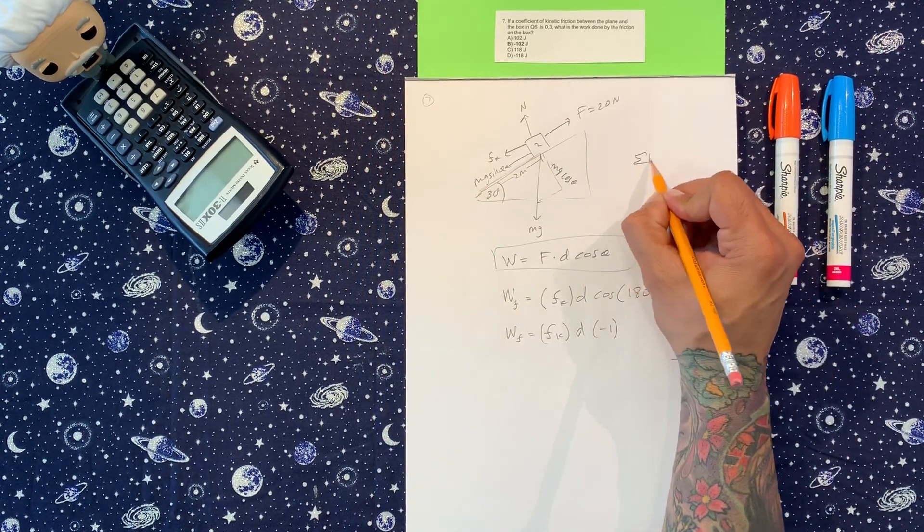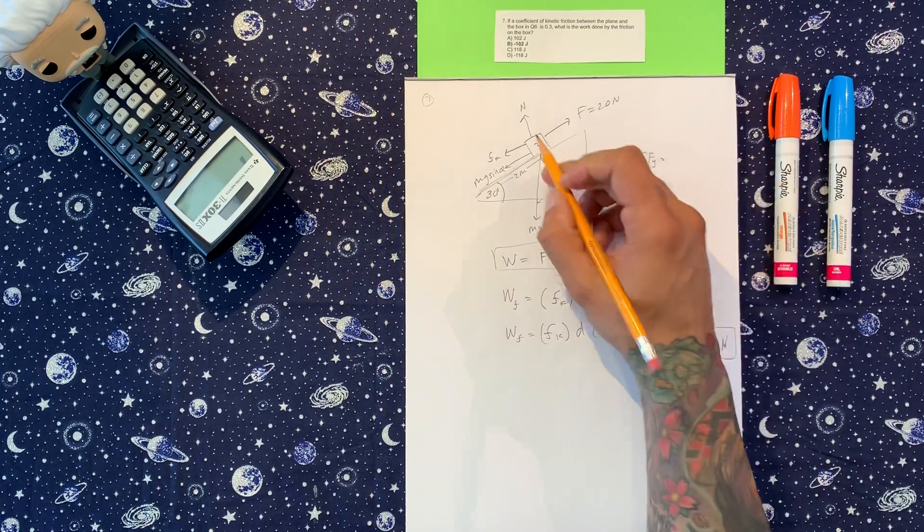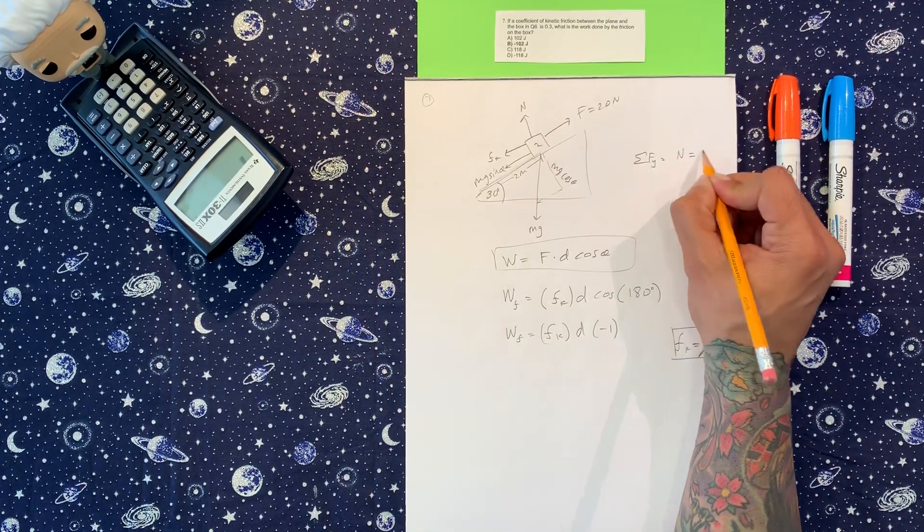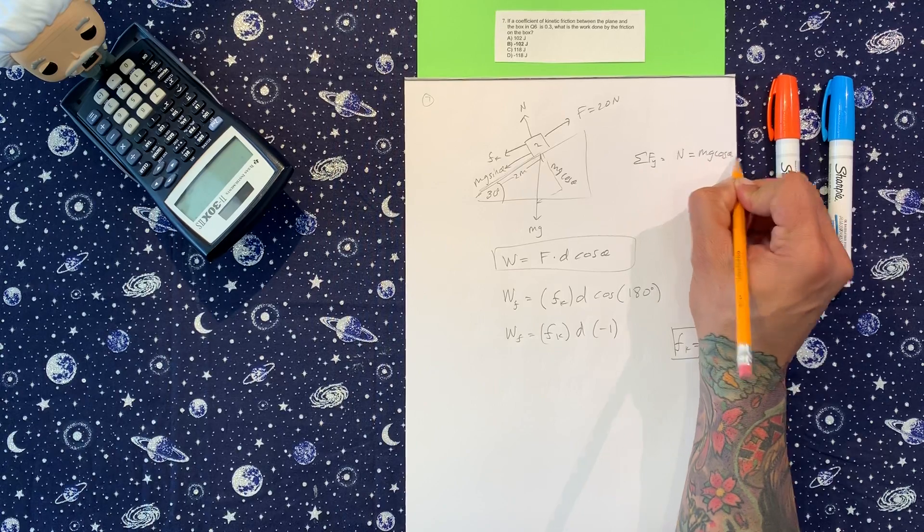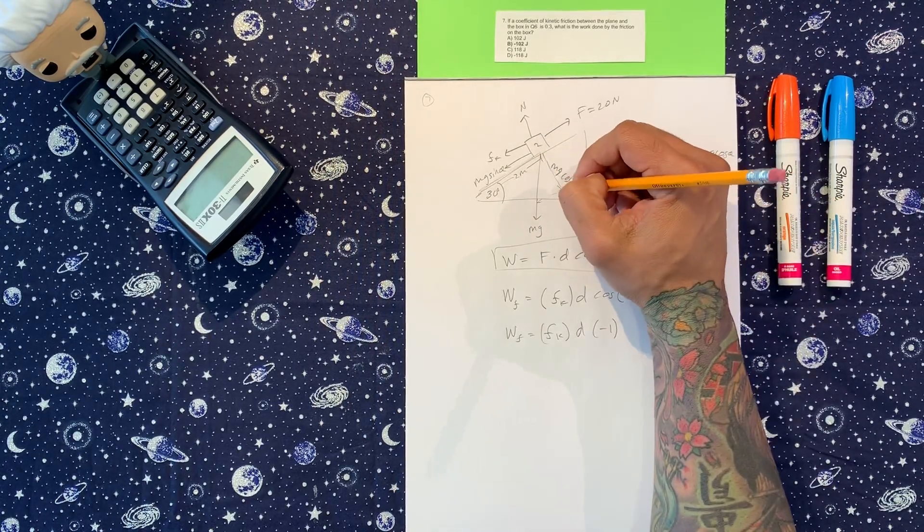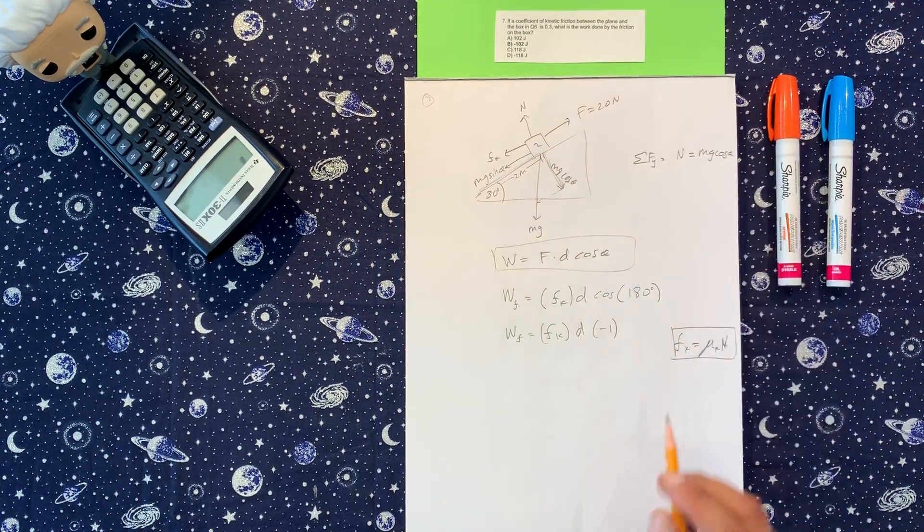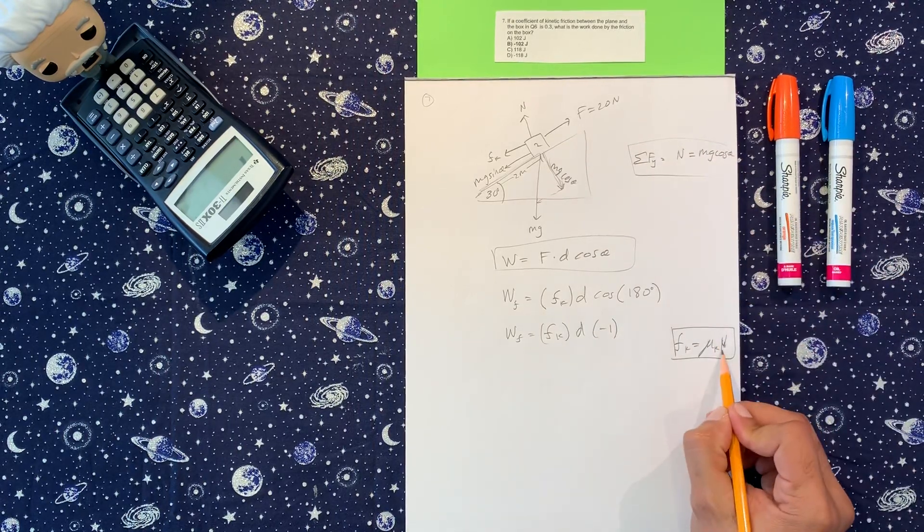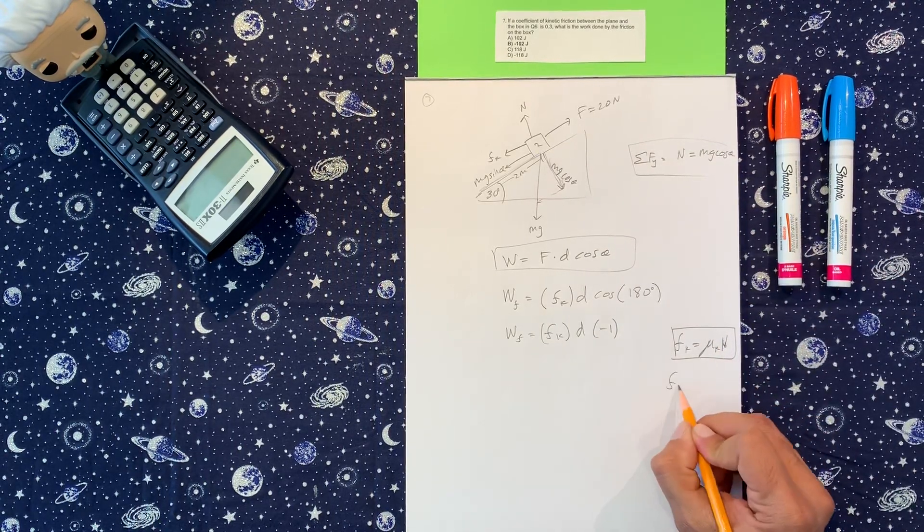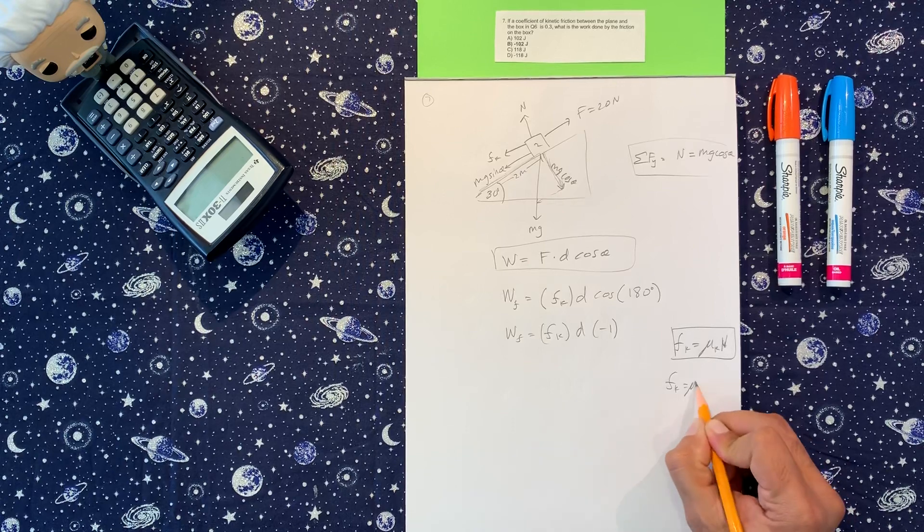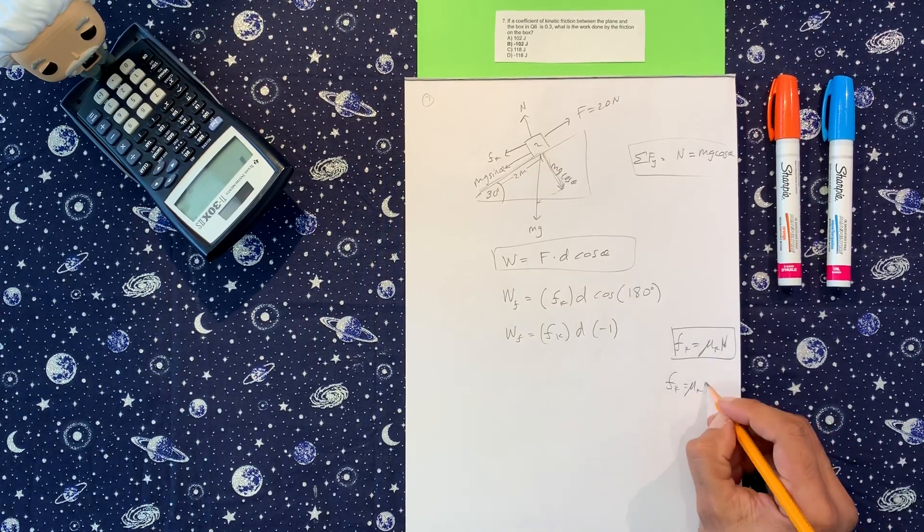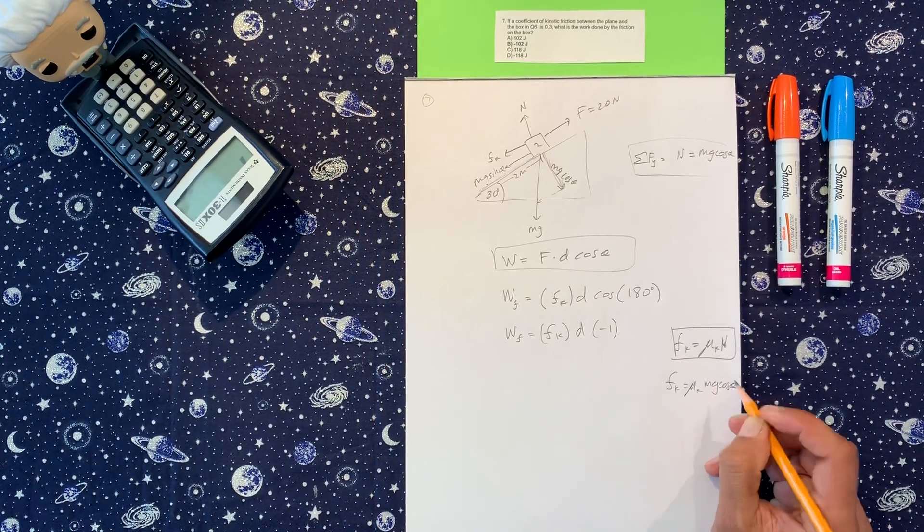And then from the free body diagram, we know that the sum of forces in the y is going to be the normal is equal to mg cosine, which is this one down here. So this is going to be replaced in here. So we got friction kinetic is mu k, mg cosine theta.